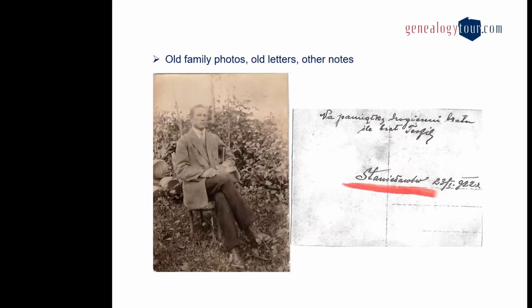Another source of information is old family photos, old letters, and other notes. It was very popular to put information on the reverse side of photos. Please check if your photo album has any information on the back. In one example, we have a man who sent a picture to his dear brother and wrote the name of the town Stanislavov and the date on the back. As far as I remember that case, it was the only source — that's how we found out where that person was from.